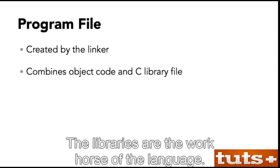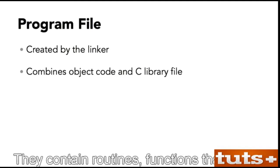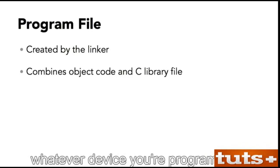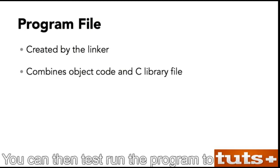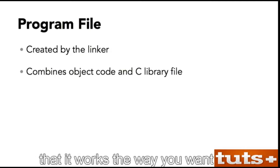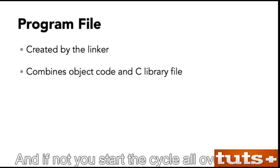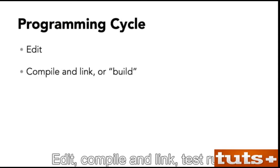It's often forgotten because modern compilers both compile and link, but linking is really a separate step. The linker takes the object code file and combines it with C language libraries. The libraries are the workhorse of the language. They contain routines or functions that control whatever device you're programming. If all goes well, the end result is a program file. You can then test run the program, and if not, you start the cycle all over again: edit, compile and link, test run.